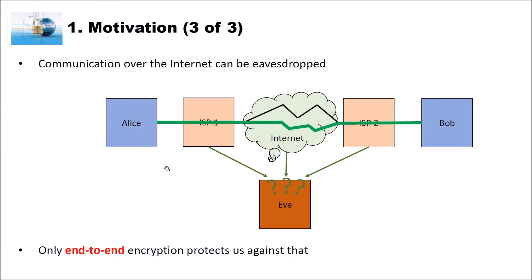To fight against Eve so she's not able to read our communication, we have to encrypt the complete traffic. Alice encrypts her data, then sends it through the complete internet over ISP1 and ISP2 to Bob. Eve can intercept packets but she cannot read them since these are encrypted.